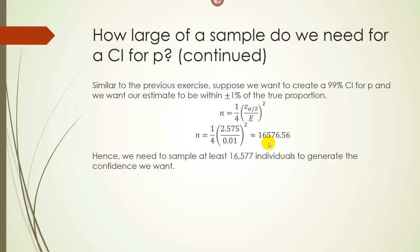So we need at least 16,577 individuals to get the confidence interval that we want. This is huge of course, but that's often why a lot of these studies that are done, like estimating who's going to win the presidency or what people think of the current president opinion polls, they often have sample sizes of 10,000 or 20,000 people.